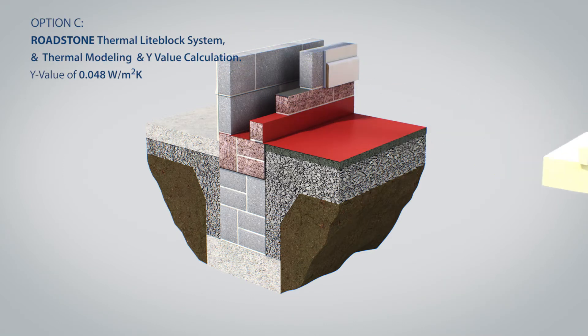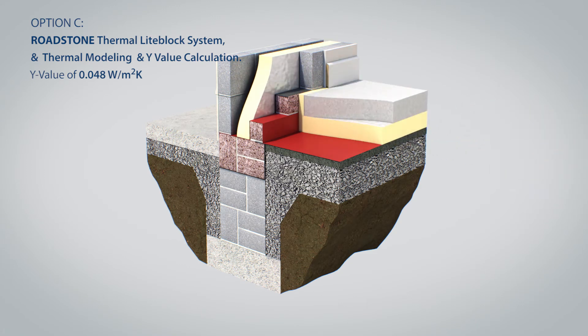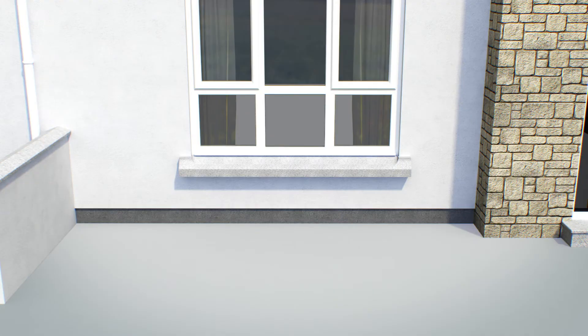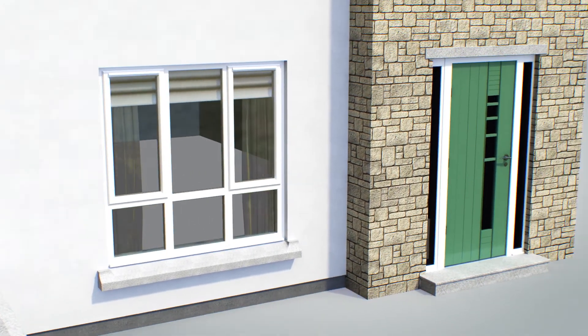In Option C, the builder avails of Roadstone's Y-Value calculation service to get a Y-Value of 0.048, thereby allowing a reduction in thickness of insulation in both the floor and walls while still maintaining the A2 BER rating.